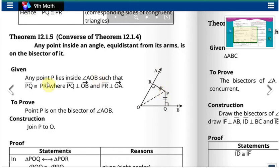So given is any point P lies inside angle AOB such that PQ is congruent to PR, where PQ is perpendicular to OB and PR is perpendicular to OA.